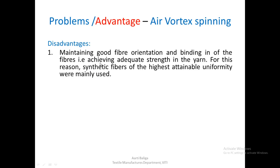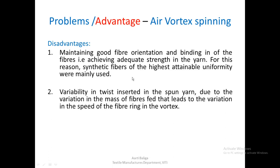Because the orientation was not good, it affects the strength of the yarn. For this reason, one cannot use cotton fibers, because there will be a lot of variation in length and the strength is lower compared to synthetic fibers. To get enough strength into the final yarn, synthetic fibers of the highest attainable uniformity were fed into this system to get yarn of adequate, usable quality.